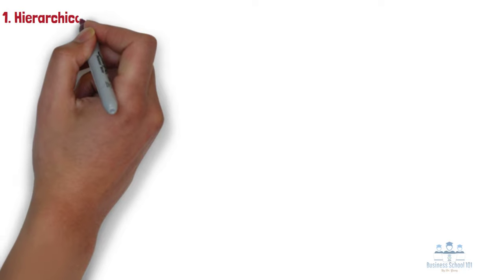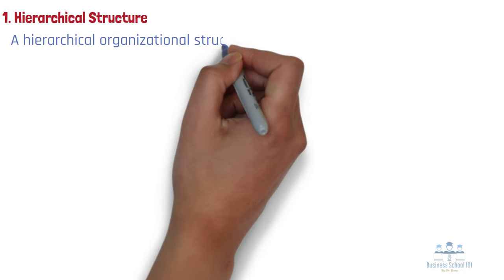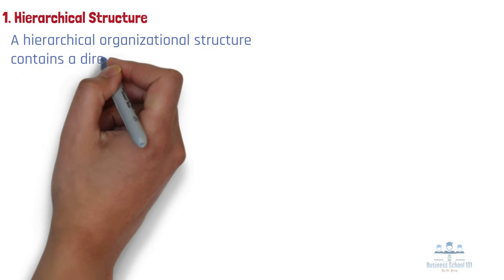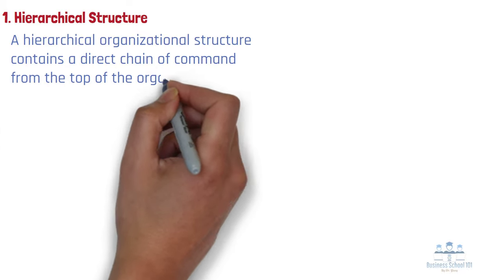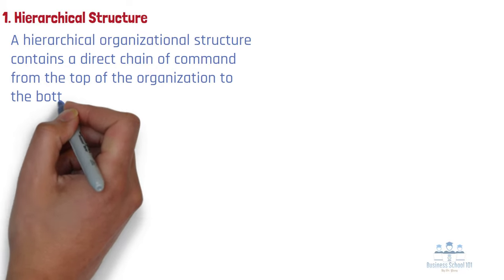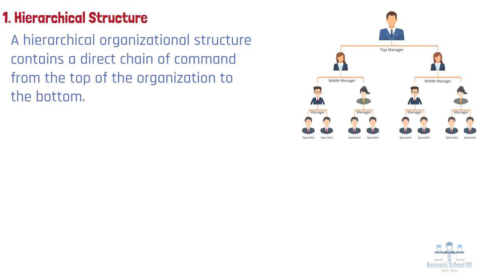Type 1: Hierarchical structure. A hierarchical organizational structure contains a direct chain of command from the top of the organization to the bottom. Senior management makes all critical decisions, which are then passed down through subsidiary levels of management. If someone at the bottom of this organizational pyramid wants to make a decision, they pass the request up through the chain of command for approval.